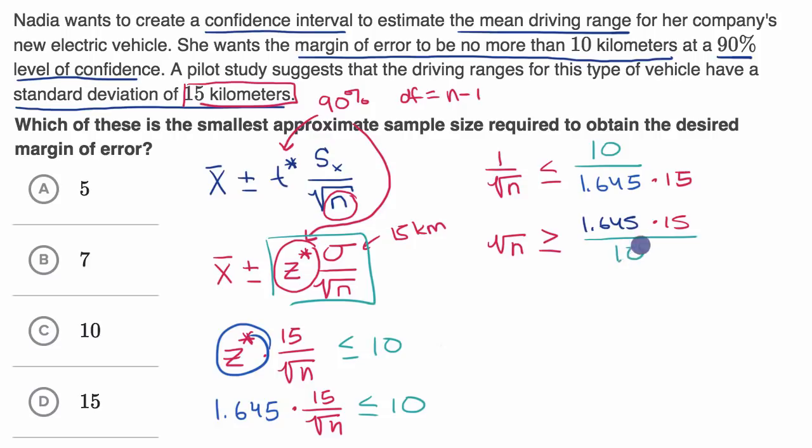See, 15 over 10 is just 1.5. So let me just write that as 1.5 right over here. And then if I square both sides, I would get that n needs to be greater than or equal to 1.645 times 1.5, and then all of that squared. I just squared both sides.